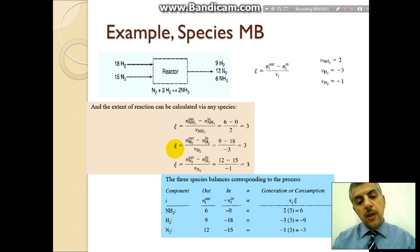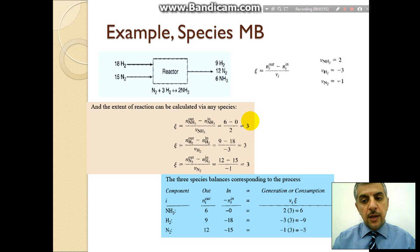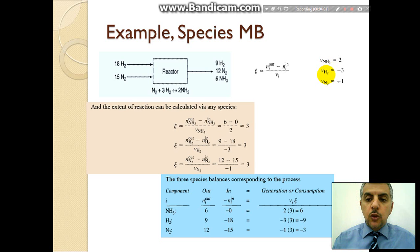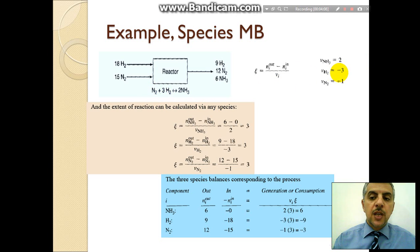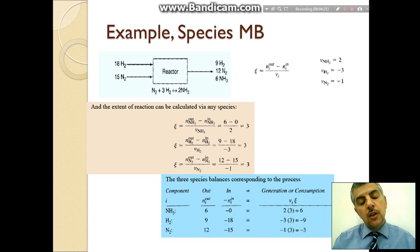You can verify this using another component such as hydrogen or nitrogen — the same value of extent of reaction will be obtained. Note that the stoichiometric coefficients are negative for reactants because there is consumption of those materials, while the stoichiometric coefficients are positive for ammonia because there is generation of ammonia in the product stream.